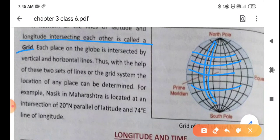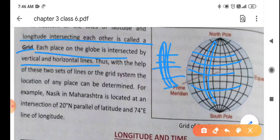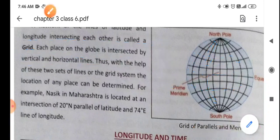Each place on the globe is intersected by vertical and horizontal line. Every place is intersected by some parallel of latitude or lines of longitude.